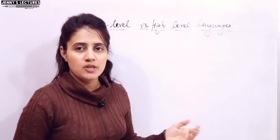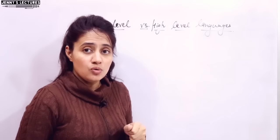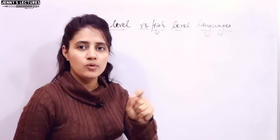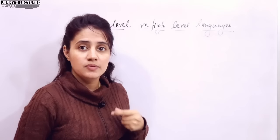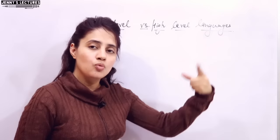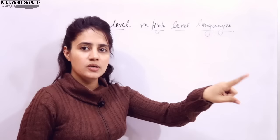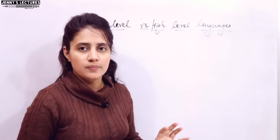The computer is nothing without programs. The language of the computer is binary — it can only understand zeros and ones. So when you write programs in any language like C, C++, or Java, that program first has to be converted into machine code — zeros and ones — and then the CPU will execute it and give you the output.